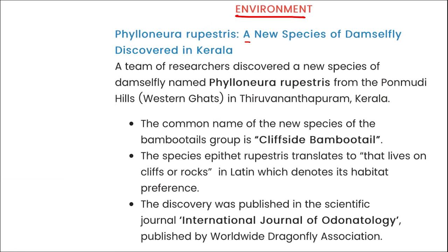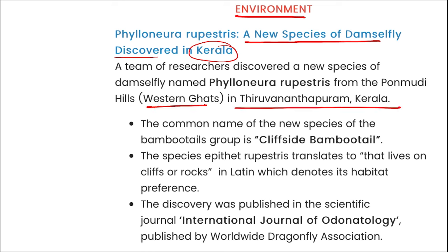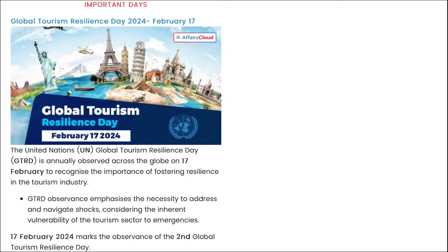In environment: a new species of damselfly has been recently discovered in Kerala. This species was discovered from the Western Ghats in Thiruvananthapuram, Kerala. This new damselfly species was named Phylonura rupestris — that is the scientific name of the damselfly recently discovered in Thiruvananthapuram, Kerala.